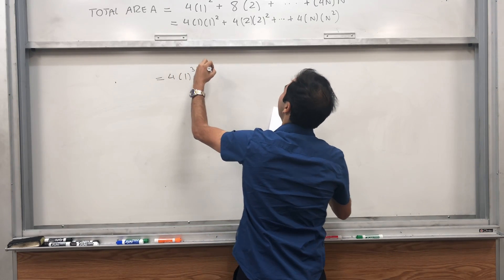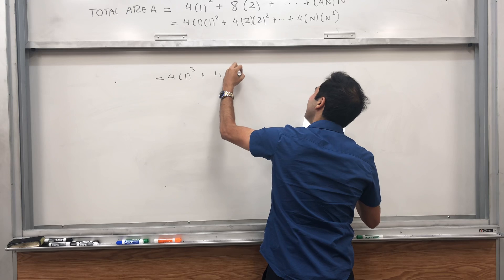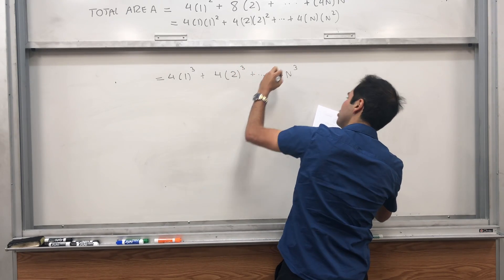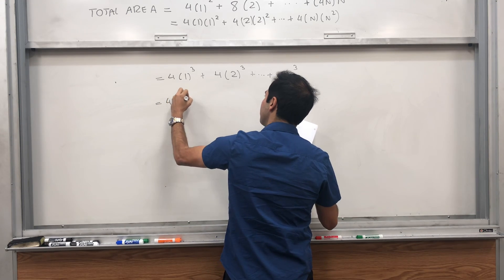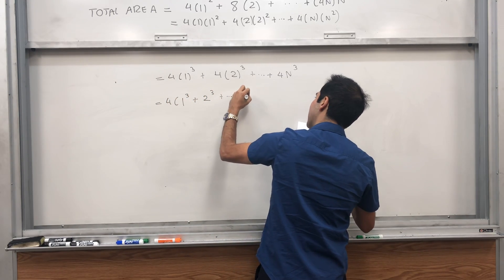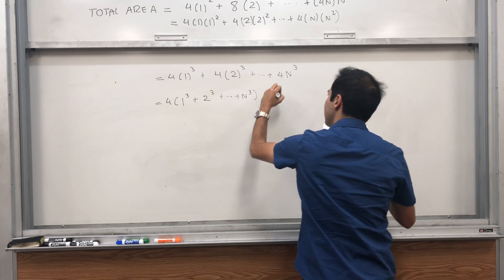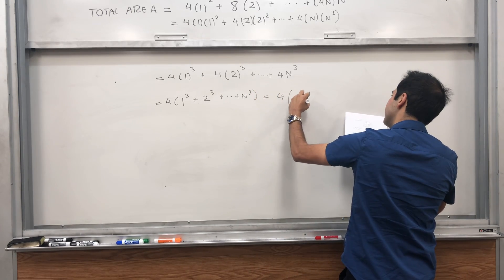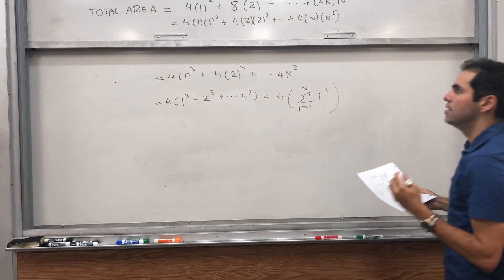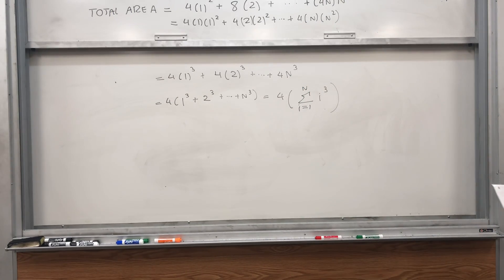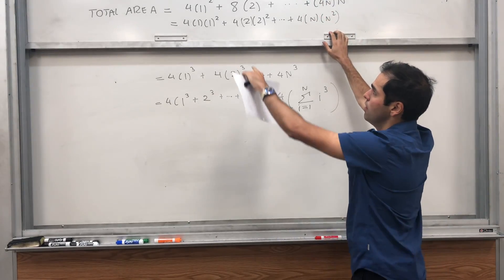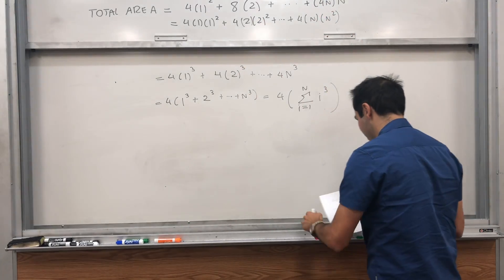And this is precisely 4 times 1 cubed plus 4 times 2 cubed, et cetera, plus 4 times n cubed, which is precisely 4 times 1 cubed plus 2 cubed plus dot dot dot plus n cubed. And that is precisely 4 times the sum of cubes. So that is one way of calculating the total area. Just sum up the areas of the squares.